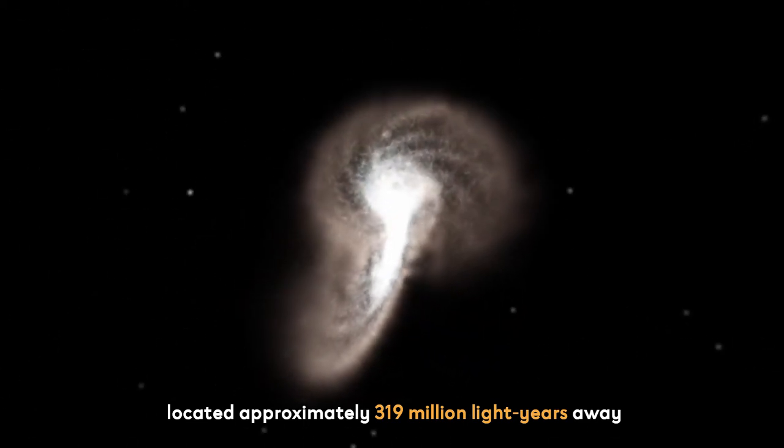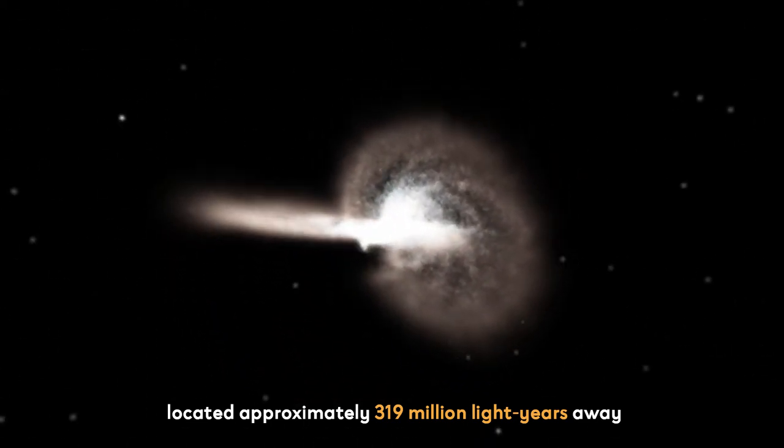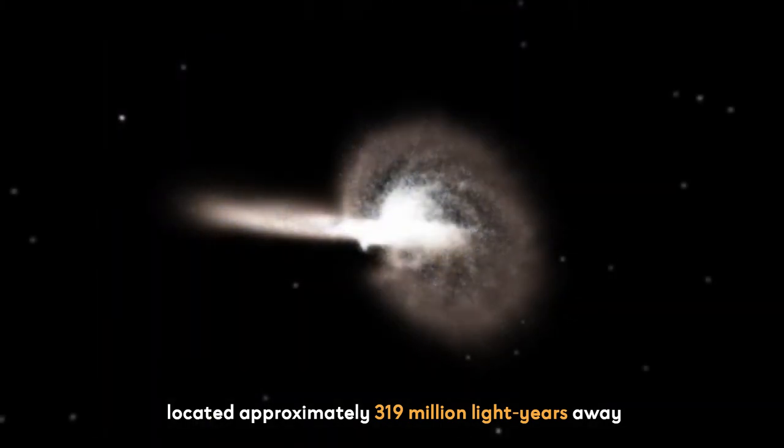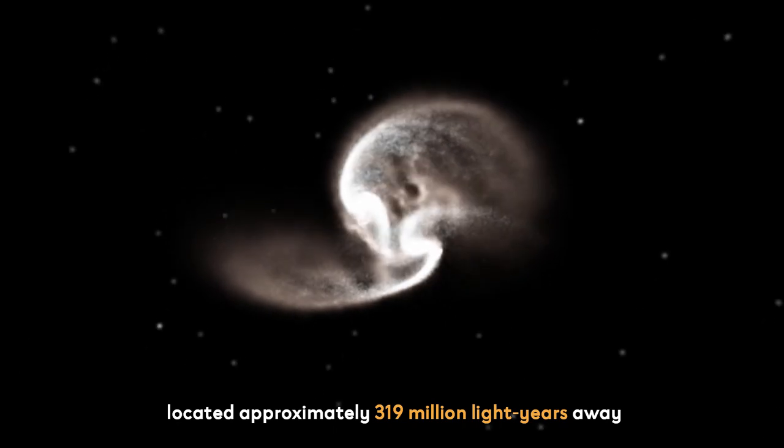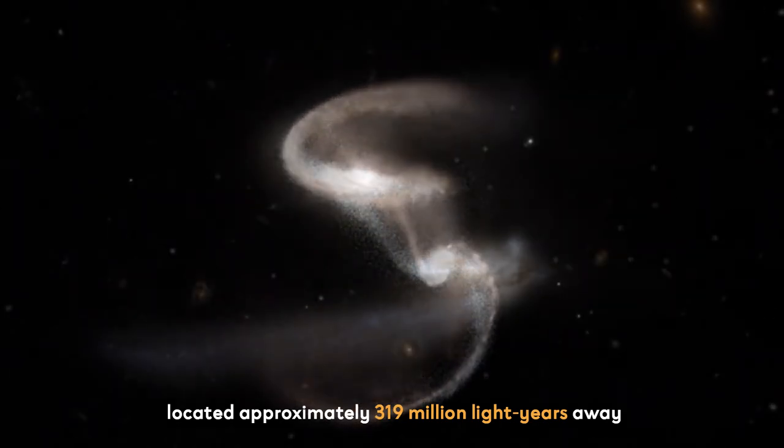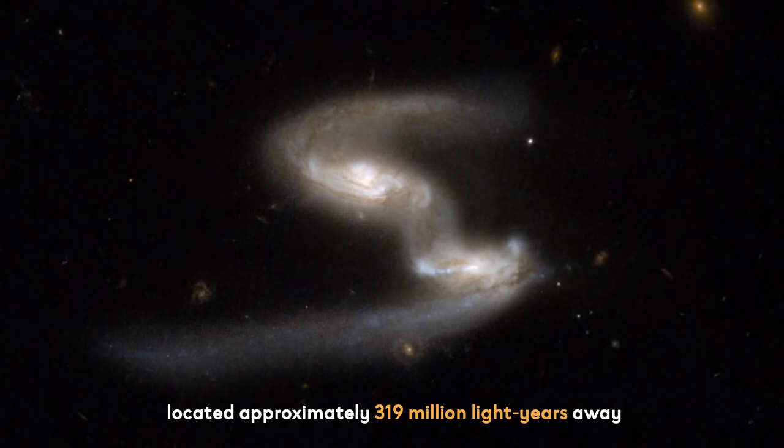It is composed of NGC-169 and the galaxy IC-1559. The ARP-282 system is located approximately 319 million light-years away in the constellation of Andromeda.